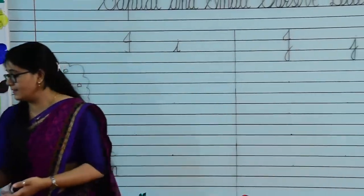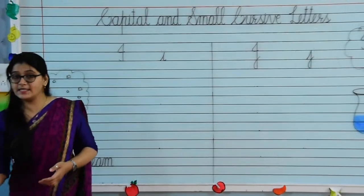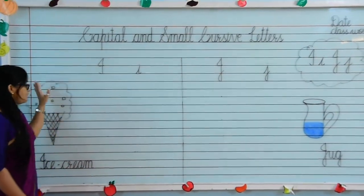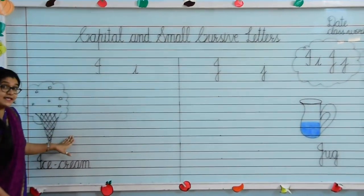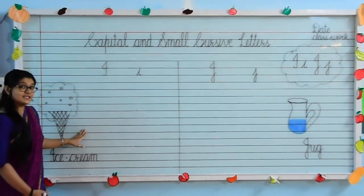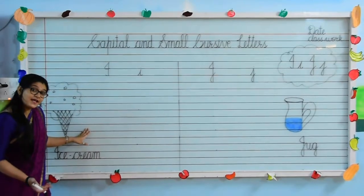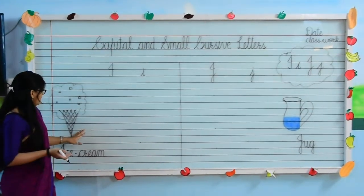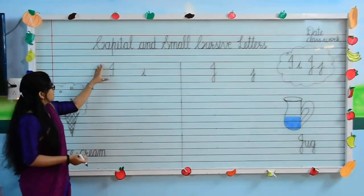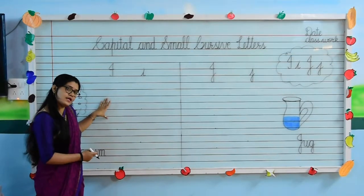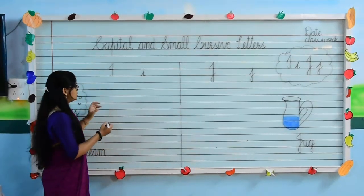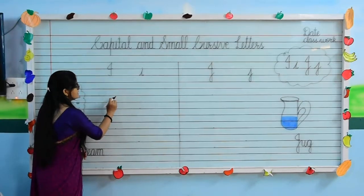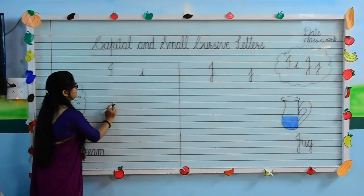Now we will start writing. See, which picture is this? This is an ice cream. Do you like ice creams? Yeah! So here we have four lines. Put your pencil on the second line.